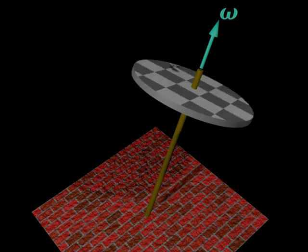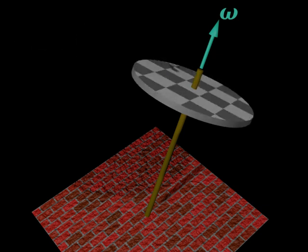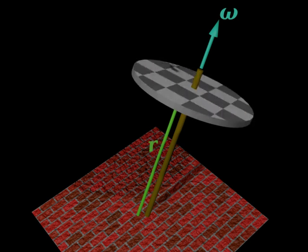Torque tau is the rate of change of angular momentum—tau equals dL/dt, which is just the rotational equivalent of F equals dp/dt. And what is torque? Torque is r cross F. What is r in r cross F? r is the displacement from the pivot point to where the force acts. The pivot point is the fixed point, because that's the point it's going to pivot about—that's the rational thing to do the calculation about. And then the force acting is gravity, which acts at the center of mass straight down.